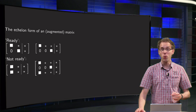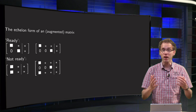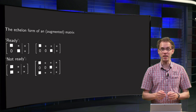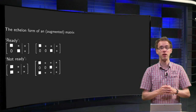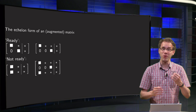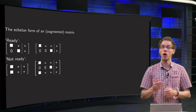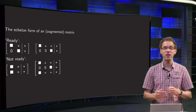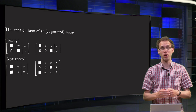The problem with row reduction is that we can go on forever, even if we do not make any mistakes. So when do we stop? What is our aim in this row reduction procedure? When are we ready? In this video we will learn what we want to achieve when row reducing a matrix.